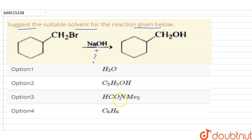C2H5OH, HCONMe2, Me2 means here a methyl group, and C6H6 or you can say benzene.